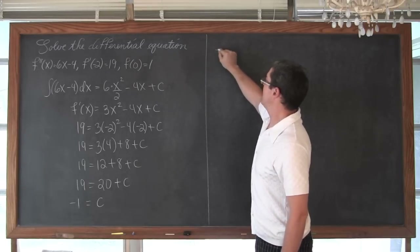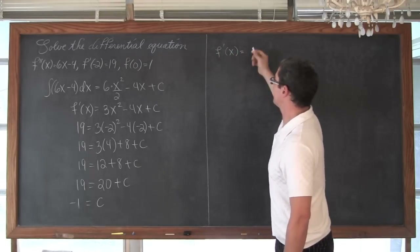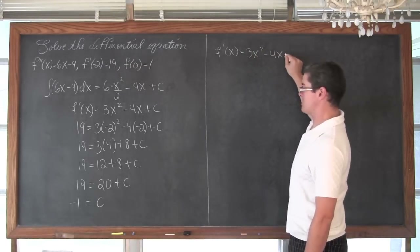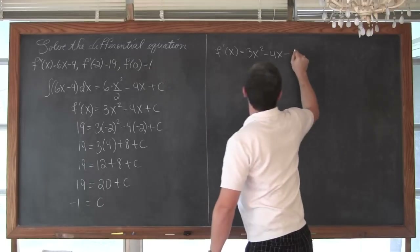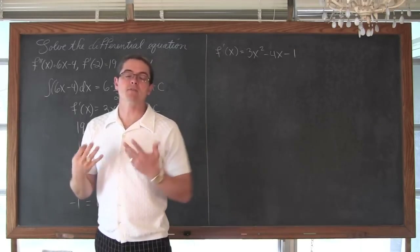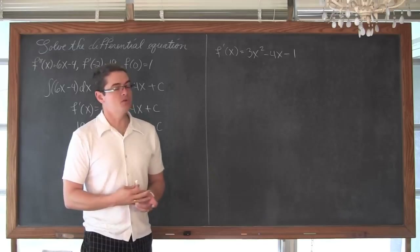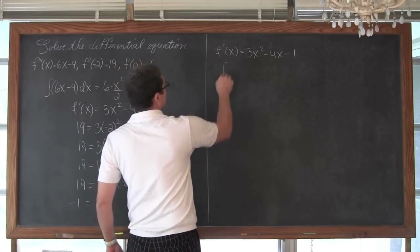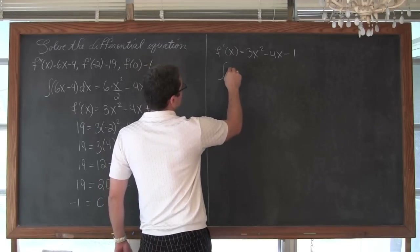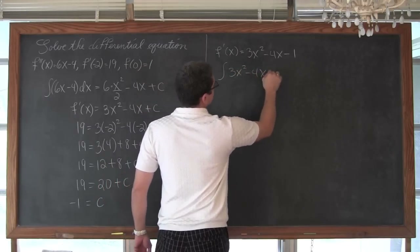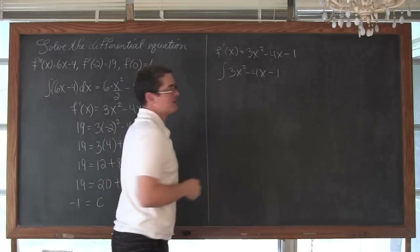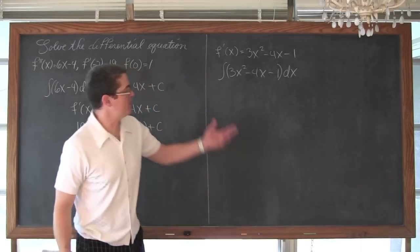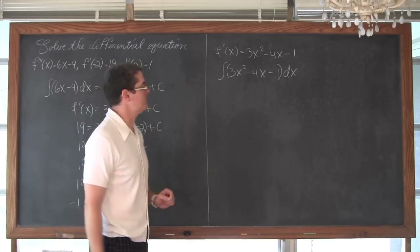Now that we have found that value of C, we can plug that back into our general solution for the first derivative and find the particular solution. So f prime of x is equal to 3x squared minus 4x minus 1, because now we know that C equals negative 1. We are going to have to go through the antiderivative process again to get the general solution for the original function. So we are going to take the integral of 3x squared minus 4x minus 1 with respect to x.